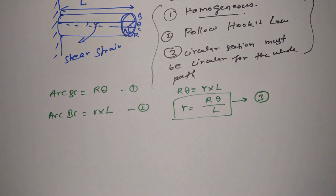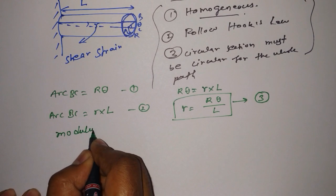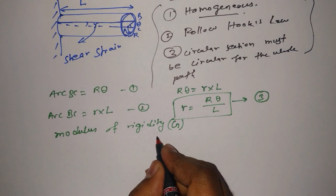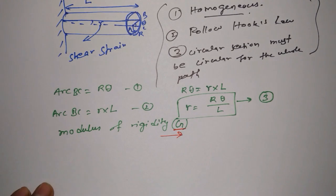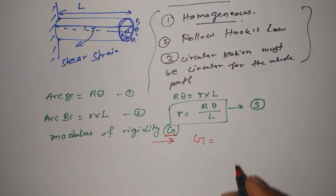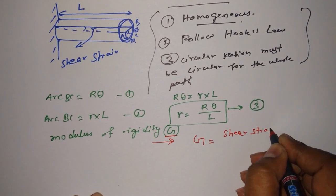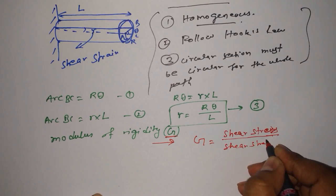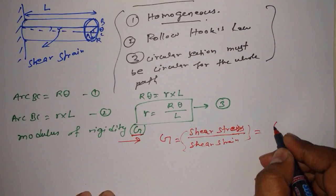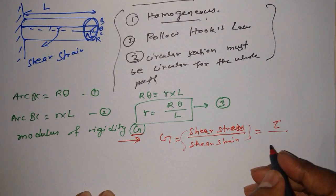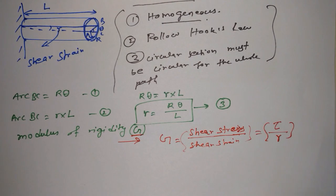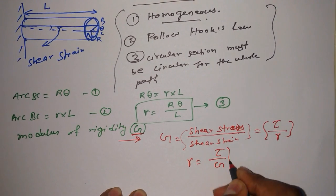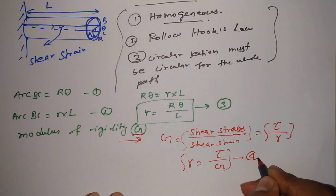Now let's come to the most common thing — that is modulus of rigidity, denoted by capital G. Most books and most of the time we have studied that modulus of rigidity is capital G. Basically, G is the ratio of shear stress to shear strain. Shear stress is denoted by tau and shear strain is denoted by gamma. From this, shear strain gamma is equal to tau divided by G. Let's call this equation number 4.